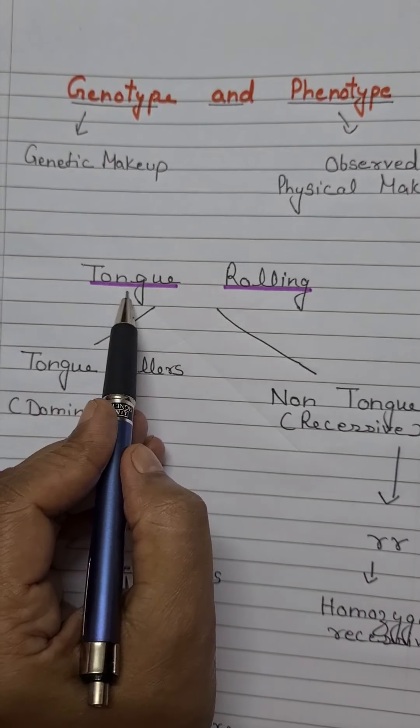Tongue rollers are of two types, since tongue rolling is a dominant trait. The first type of tongue roller has both alleles of the gene controlling tongue rolling of the same dominant type. These are called homozygous dominant — meaning both alleles are of the same type and both are dominating.